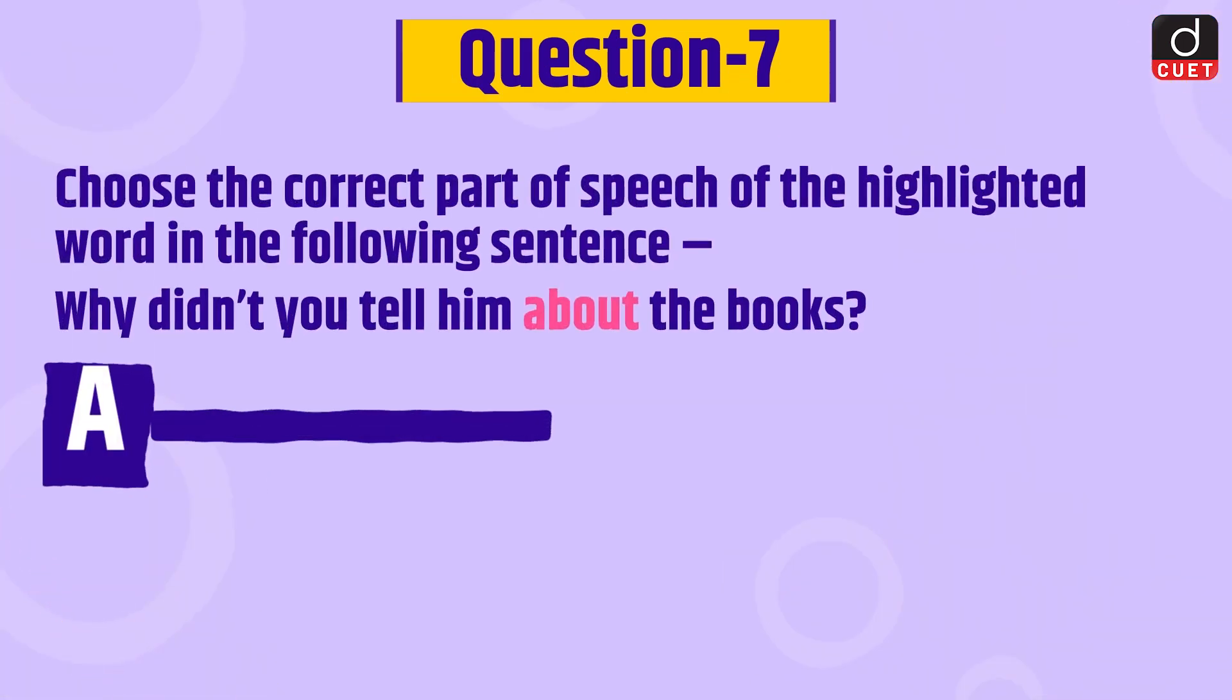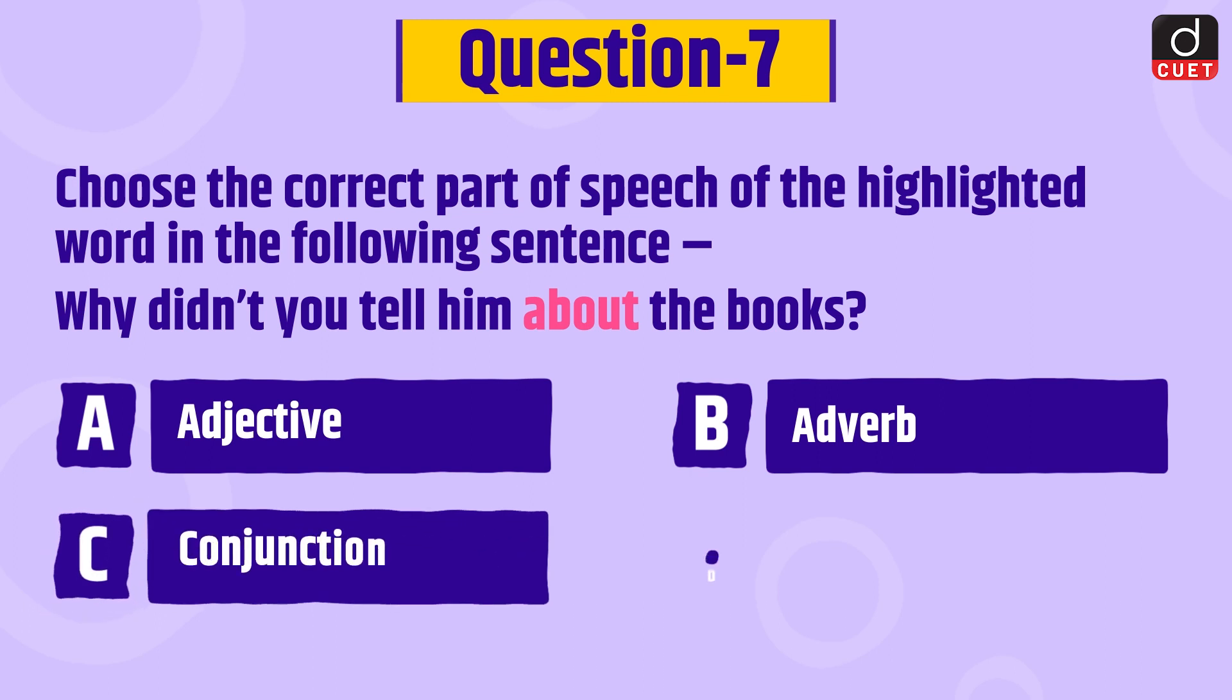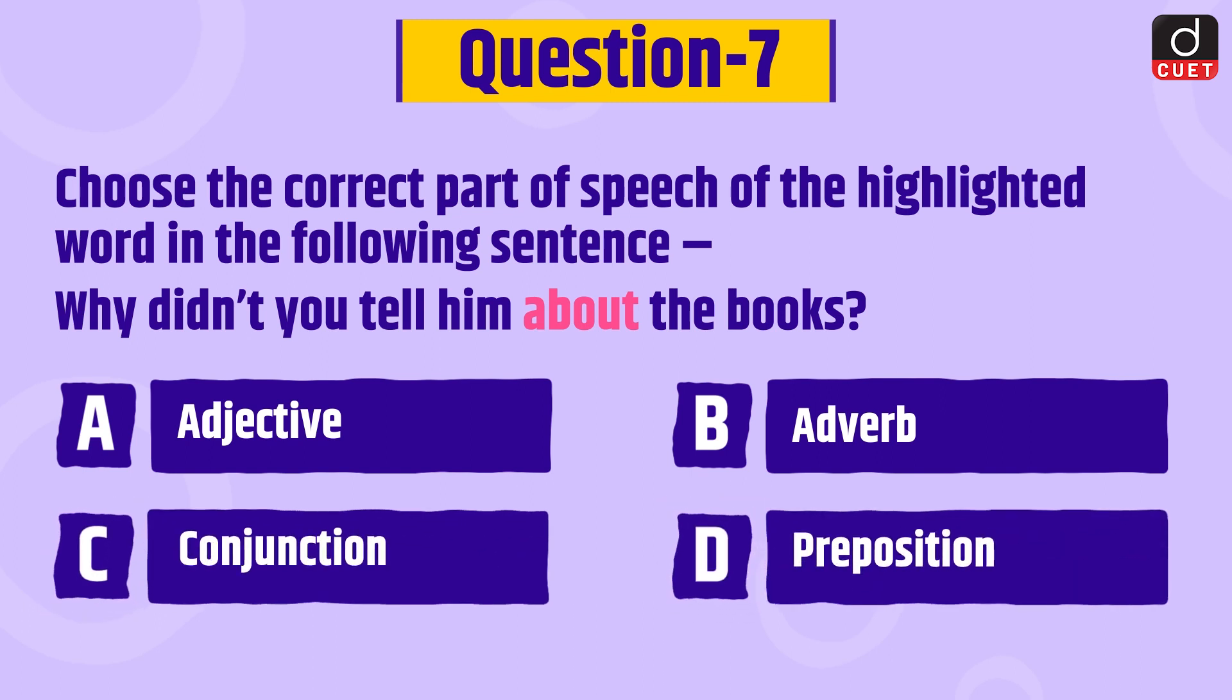Next question is, choose the correct part of speech of the highlighted word in the following sentence. Why didn't you tell him about the books? Highlighted word is about. Adjective, adverb, conjunction or preposition.